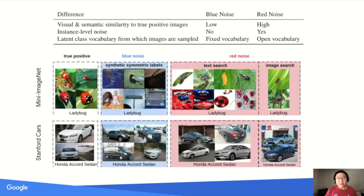The following figure compares images with blue noise and red noise. Images with red noise, which is noise from the web, have higher similarity to positive images, are at instance level, and come from an open vocabulary outside the fixed vocabulary defined in MiniImageNet or Stanford Cars.